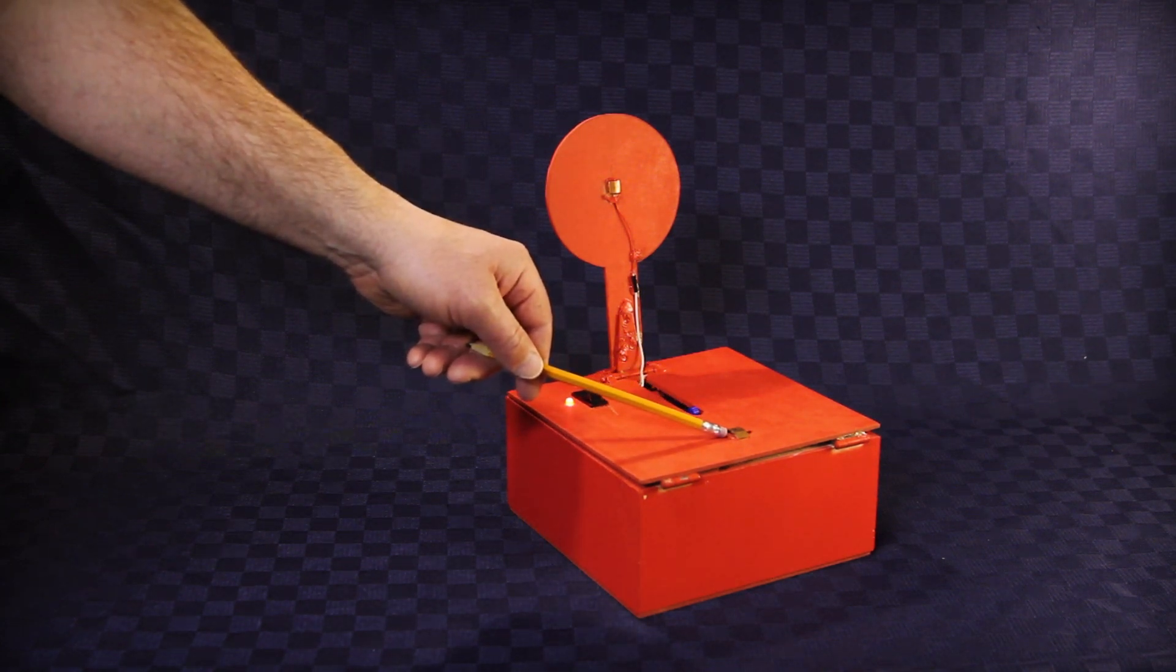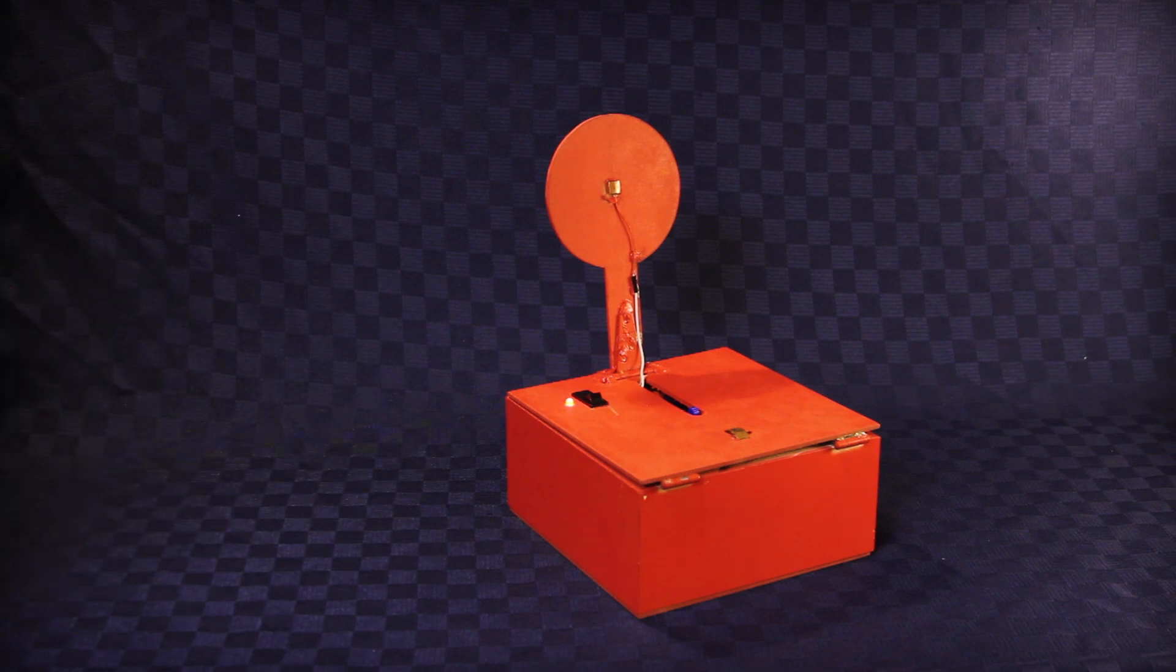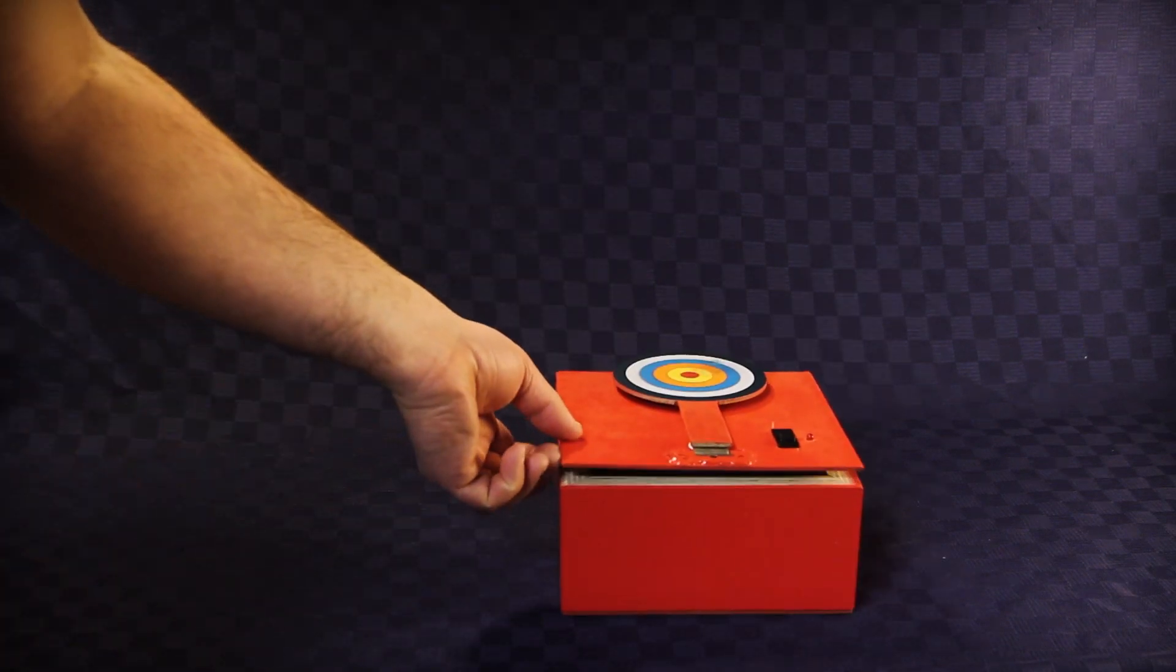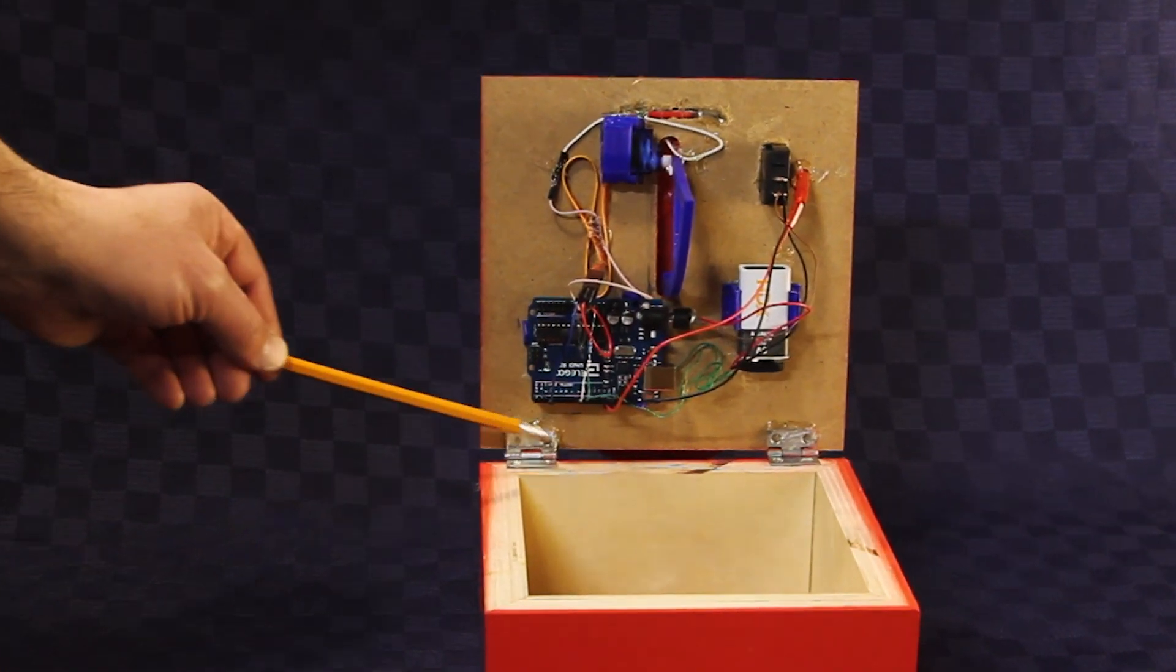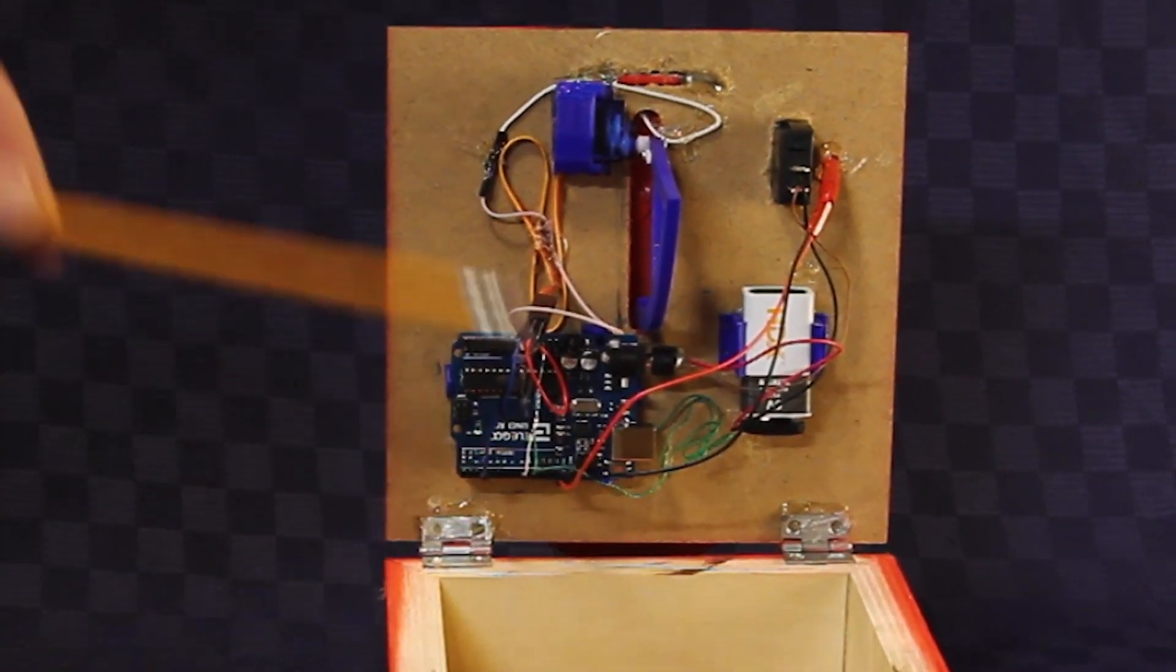There's another contact on the back that also goes to the Arduino board as well. When you open up the lid, you can see the electronics. Down at the bottom I hot glued a couple of hinges to connect to the base.